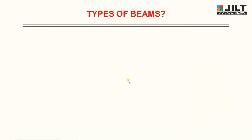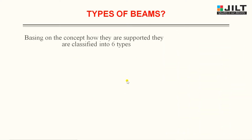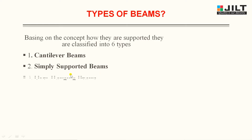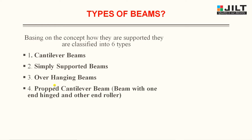Now let us see what types of beams are available. Based on how they are supported, beams are classified into six types: Number 1 — Cantilever beam; Number 2 — Simply supported beam; Number 3 — Overhanging beam; Number 4 — Propped cantilever beam, which can also be described as a beam with one end fixed and other end roller; Next — Fixed beam; and finally — Continuous beam.